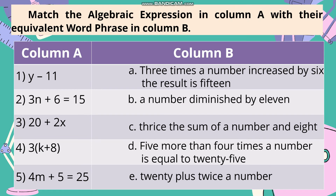Match the algebraic expression in Column A with their equivalent word phrase in Column B. Number 1: y minus 11 — Answer: Letter B, 'A number diminished by 11.' Number 2: 3n plus 6 equals 15 — Answer: Letter A, '3 times a number increased by 6, the result is 15.' Number 3: 20 plus 2x — Answer: Letter E, '20 plus twice a number.' Number 4: 3 times (k plus 8) — Answer: Letter C, 'Thrice the sum of a number and 8.' Number 5: 4m plus 5 equals 25 — Answer: Letter D, '5 more than 4 times a number is equal to 25.'